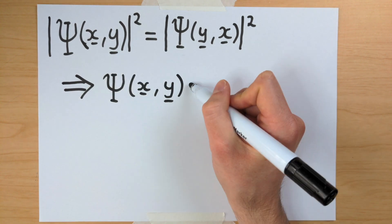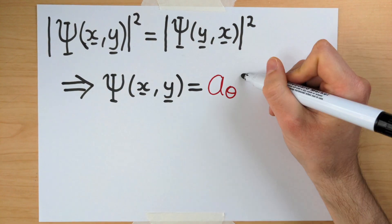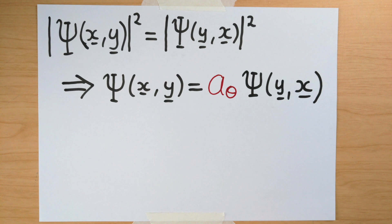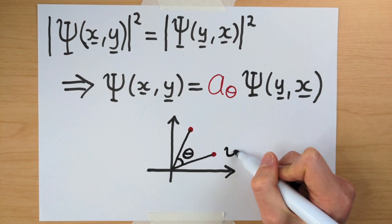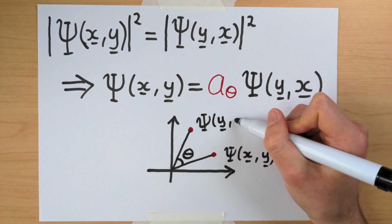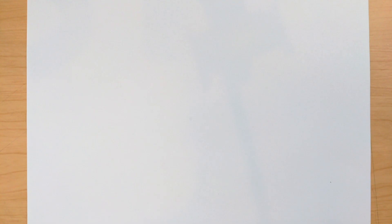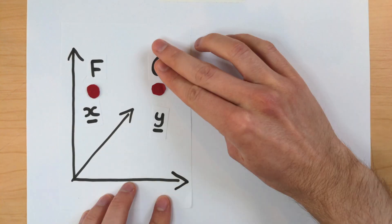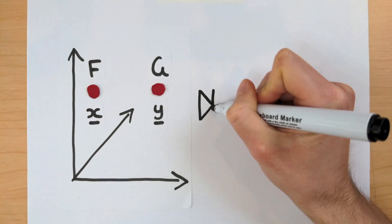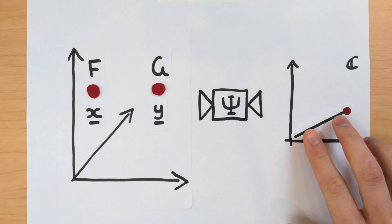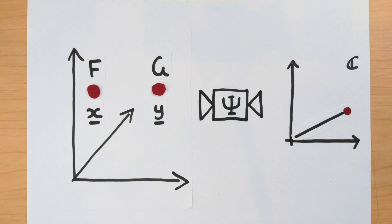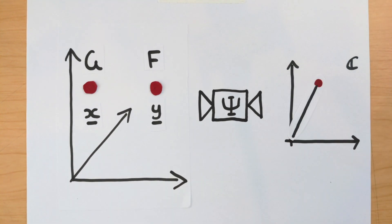No, not at all. Remember, if the moduli of two complex numbers are the same, then the numbers themselves are related to one another by some rotation in the complex plane. So the wave function output for Fred at x and George at y has to be just a rotated version of the output for George at x and Fred at y.